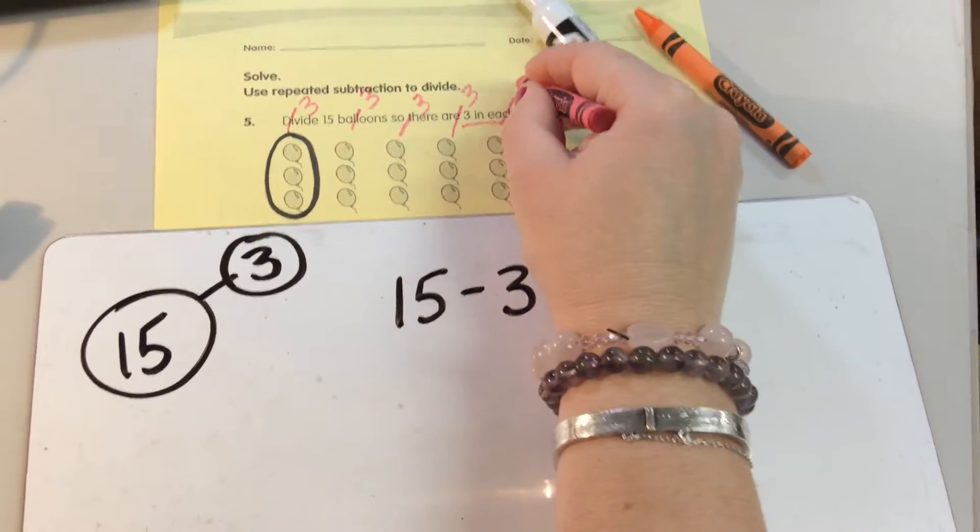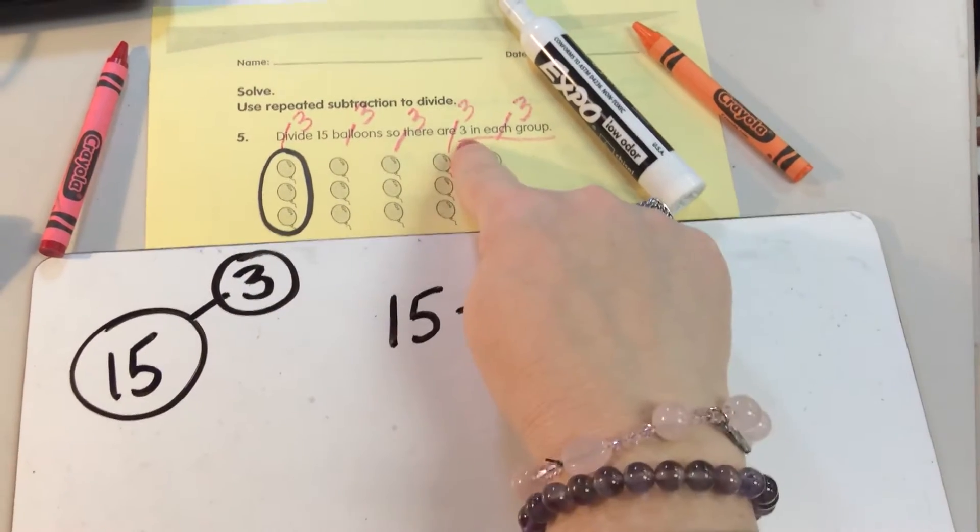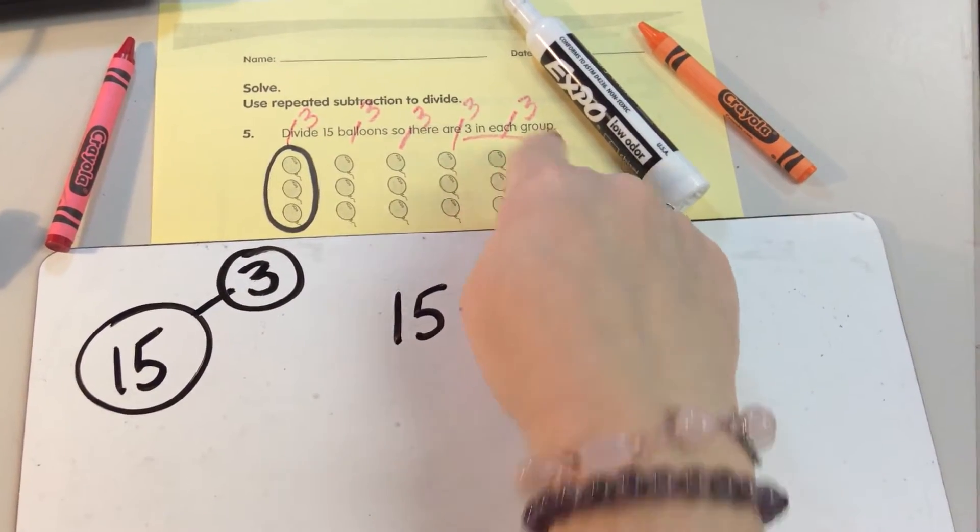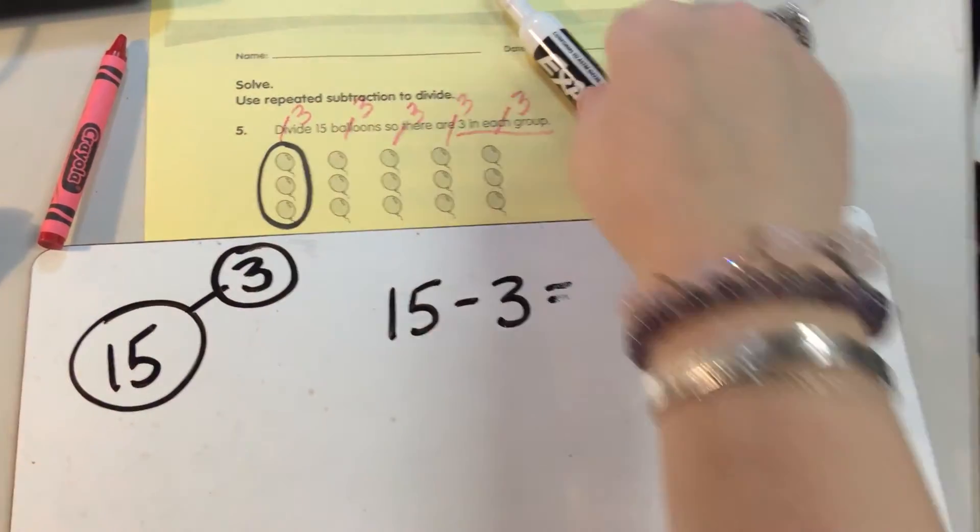I'm showing my work. I'm showing what I know. I know that these are in 3s, because first I thought, it says 3 in each group. So, 3 in that group. And I circled it. I said, that's a group.